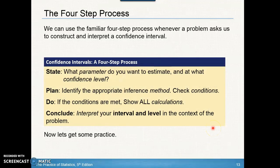We use a four-step process to construct a confidence interval: State, Plan, Do, Conclude. State the parameter you're estimating and the name of the test. Plan means identifying the appropriate inference method — one-sample Z confidence interval for proportions — and checking the conditions we talked about. Do means showing all calculations plugged in. Conclude means interpreting the interval and confidence level in context of the problem. In the next slide, we'll get into some problems.